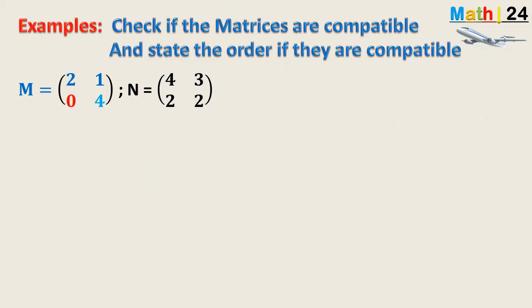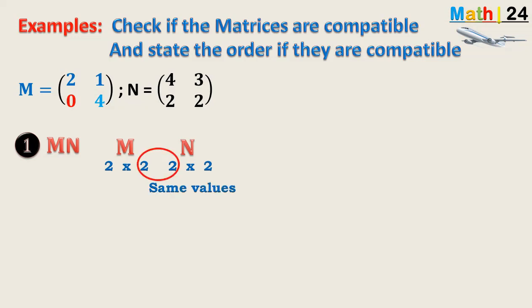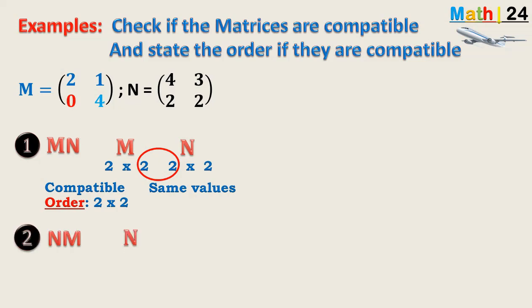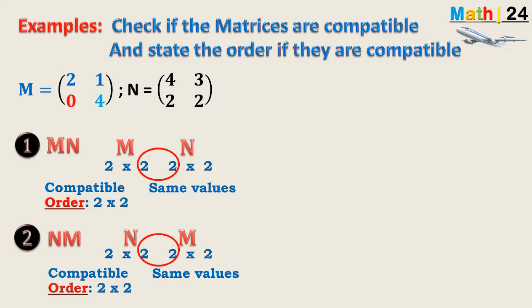Now, check if the matrices below are compatible and if so, state the order of the resulting matrix. For the product MN, where M is [2, 1; 0, -4] and N is [4, 3; 2, 2]: M has order 2×2 and N has order 2×2. The number of columns in M equals the number of rows in N, so they are compatible, and the resulting order is 2×2. Checking NM similarly, both are 2×2 and equally compatible with order 2×2.